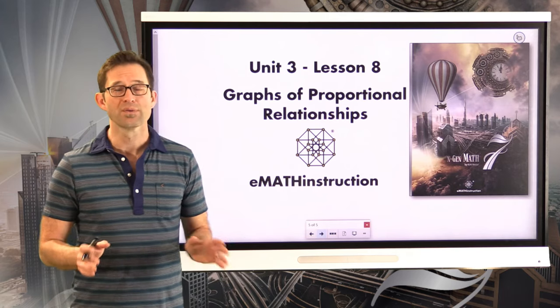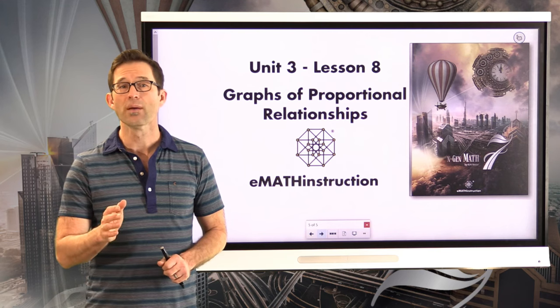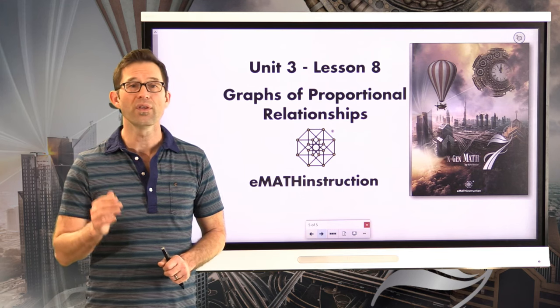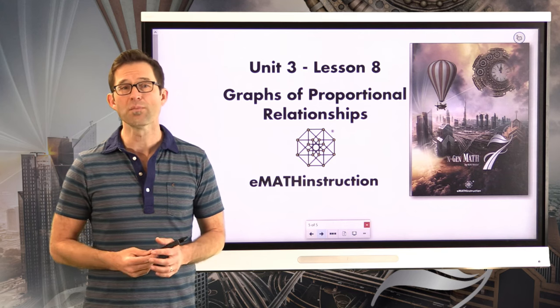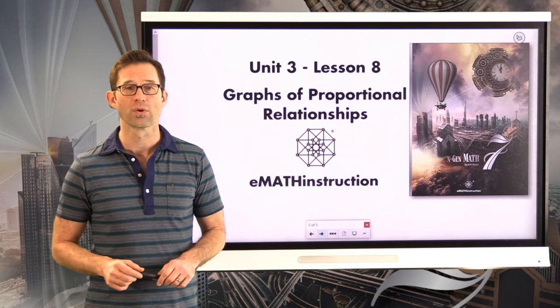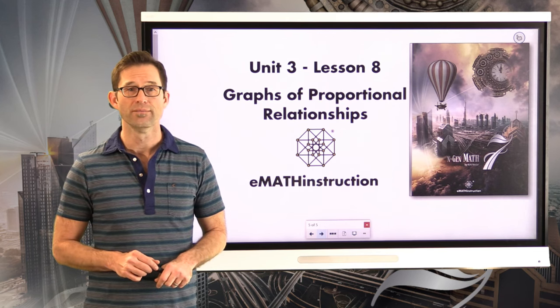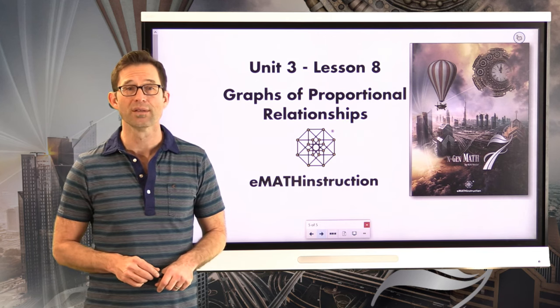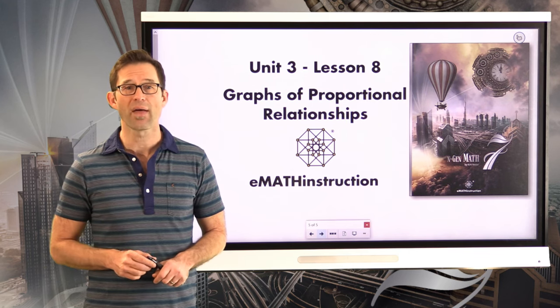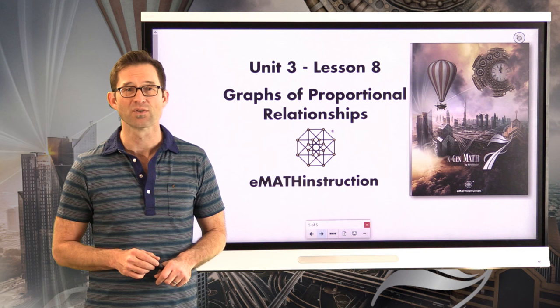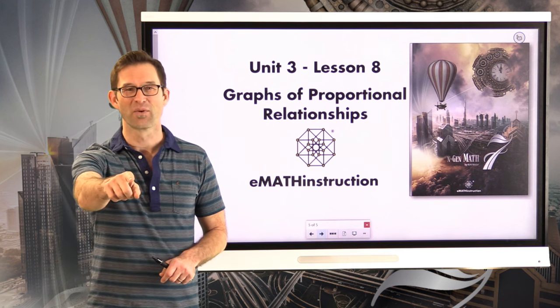All right. Let's wrap this thing up. We didn't see a lot that was new today. All we were really doing was working with graphs of proportional relationships, using them to also figure out what the unit rate was, and then reiterating the idea that the unit rate can always be found on a graph of a proportional relationship. When the x value is 1, then the y value gives you that unit rate. We'll work with this a bit more in the coming lessons. For now, I just want to thank you for joining me for another NGen Math 7 lesson by EMath Instruction. My name is Kirk Weiler, and until next time, keep thinking and keep solving problems.